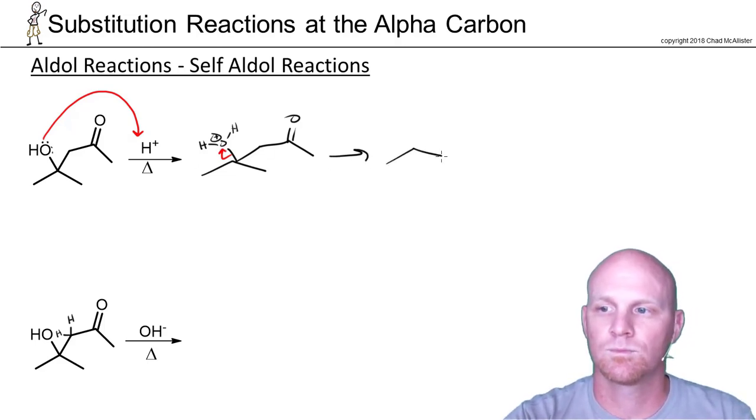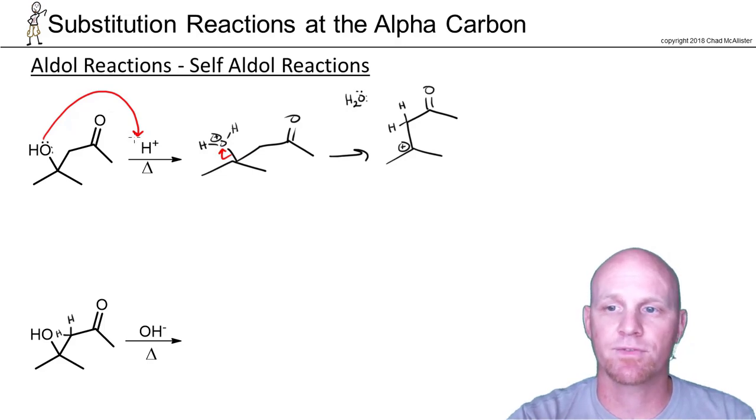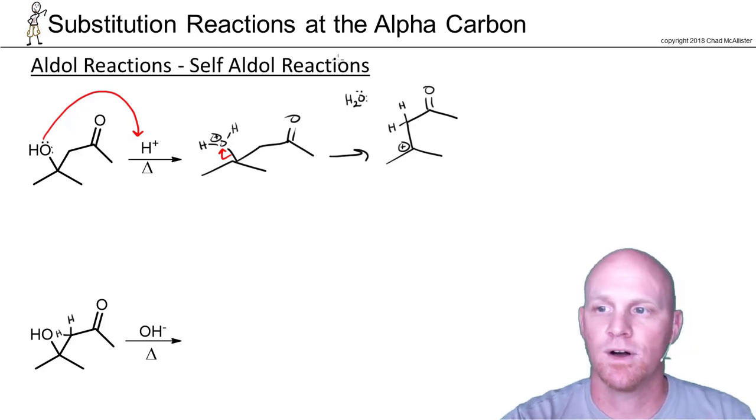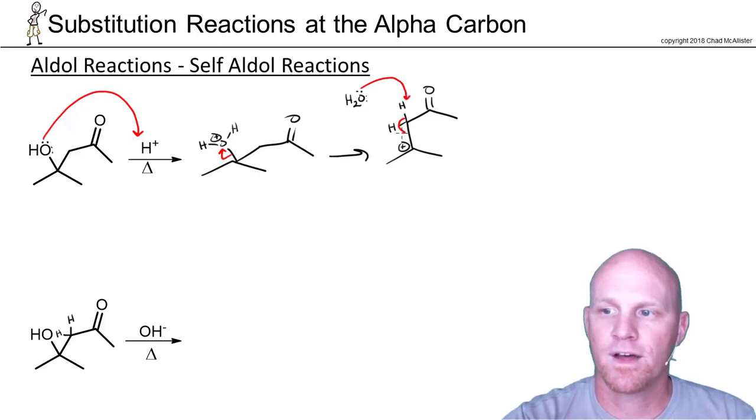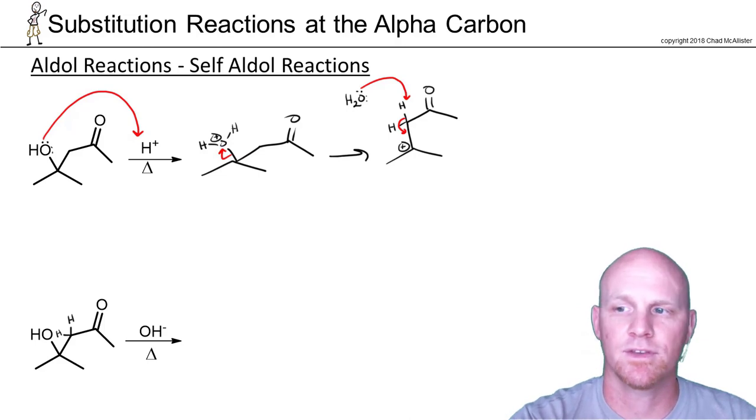From here, we just need to deprotonate one of these, and we're going to do that with the water molecule we just formed. Technically, we could also use the conjugate base of whatever acid is here as well. Cool. And that's the second step of our elimination. If you look, this is very reminiscent of E1 elimination.